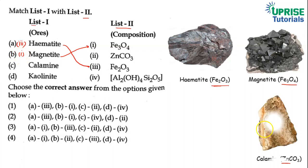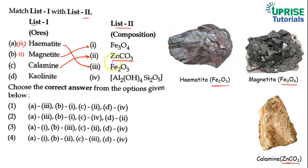Next hai calamine. Calamine jo hota hai, vah zinc ka most important ore maana jata hai. Aur iska formula hota hai ZnCO3, jise hum log zinc carbonate bhi kehte hain. To calamine jo hoga, vah second wale se match karega. Means C wala jo hoga, vah second se match karega.